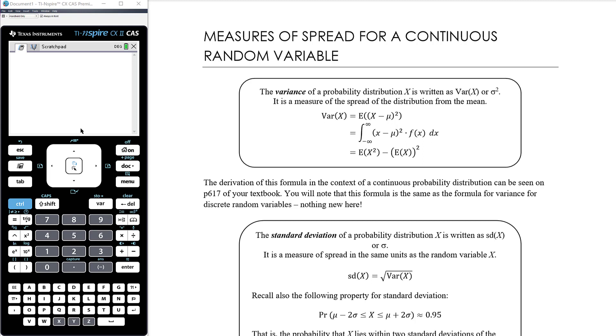OK, so in this video we want to look at calculating measures of spread for a continuous random variable. We've looked at measures of center and spread for discrete random variables, so there really isn't much new here. We're looking here at variance and standard deviation. We'll talk about a couple of other measures of spread, but we won't really use those that frequently.